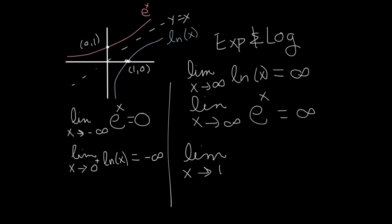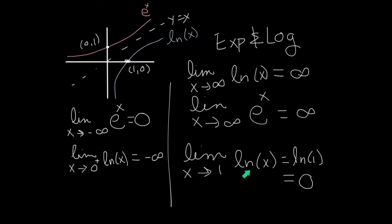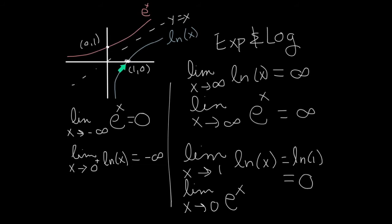The limit as x approaches one of the ln graph equals zero — it doesn't matter which direction we approach from, and both equal zero because ln is continuous at x equals one. When a function is continuous, we can just plug in the value, so ln of one equals zero. Similarly, the limit as x approaches zero of e to the x: as x approaches zero, the exponential function approaches one, because e to the zero power equals one, and the exponential function is continuous at x equals zero.